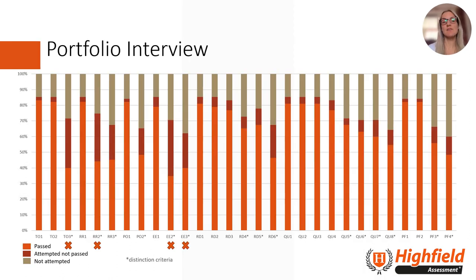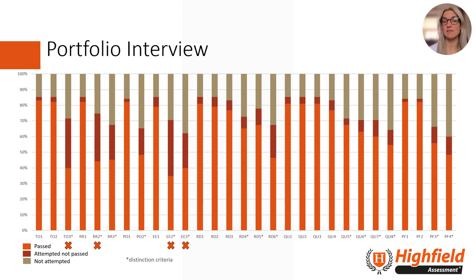We analysed a proportion of learner reports where learners had failed to pass in the portfolio interview. For each assessment criteria you can see the proportion of learners who have either passed, failed, or not even been able to attempt the criteria. A high proportion of brown means learners in the main did not have the opportunity to attempt the criteria — we expect this to happen with distinction criteria where there was not the opportunity to stretch due to time constraints. The highest proportion of criteria which learners attempted but did not pass, shown in red, were also mainly distinction criteria.